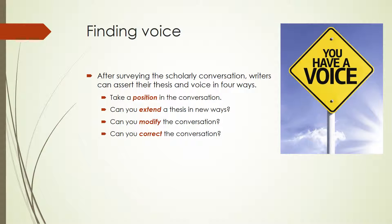Where does one find voice? Voice derives from the writer's understanding and confidence in his or her thesis as a valid and valuable solution and contribution to the conversation. After surveying the scholarly conversation, writers can assert their thesis and voice in four ways. First, you might agree with a current viewpoint and take a position in the conversation — by doing so, you situate your thesis in the conversation, but you do not change or advance it. When researchers recognize a conversation in need of change, when the current positions or assumptions seem inadequate, then they re-read the primary sources and read the critical literature for creative agreement and disagreement in order to challenge commonplaces, go beyond the commentaries, and advance the conversation in small or large ways.